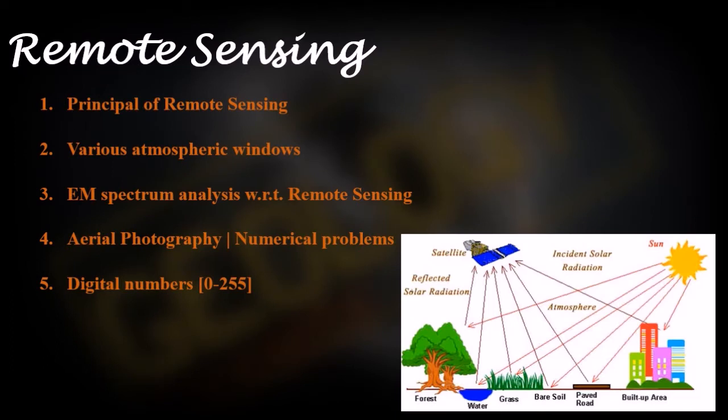Next we'll go to remote sensing. This is an important topic but it's not a very big topic. We will start with the principles of remote sensing, then we will go into various atmospheric windows like H2O window, then minerals, sensors and satellites. Then we will go to electromagnetic spectrum analysis with respect to remote sensing, which part of the EM spectrum is relevant for what kind of observations. Then aerial photography techniques, and there are numerical which are coming from these parts.